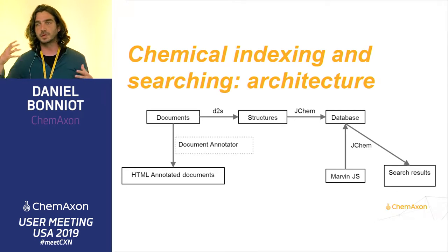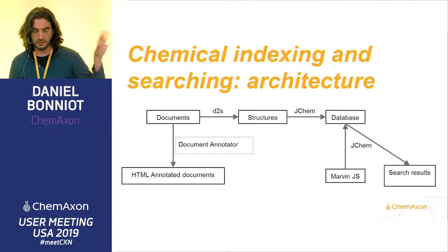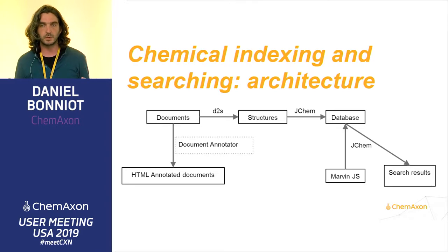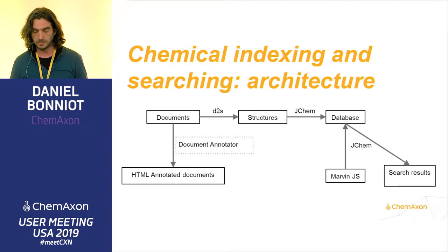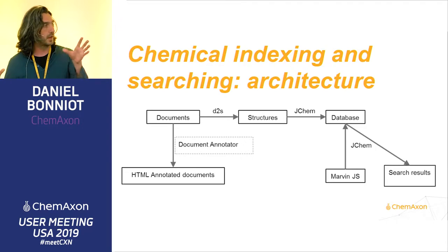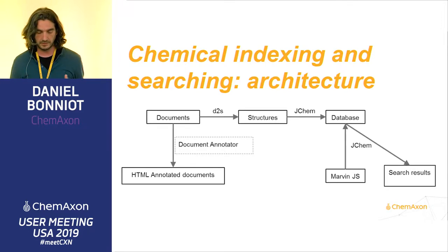If we step back a little bit and see how we can integrate that with other ChemAxon tools to do a useful workflow: the left side is the naming I already mentioned. What appears on the right is JCAM. Once you have the list of structures found in your documents, it's quite natural to insert them into a JCAM database. This indexing happens ahead of time, and then the user can use Marvin.js to draw a query and query the database that has been built using the naming tools — getting search results with information about which documents contain that structure. This covers all the tools that ChemAxon provides.